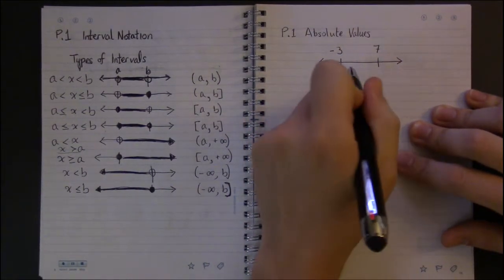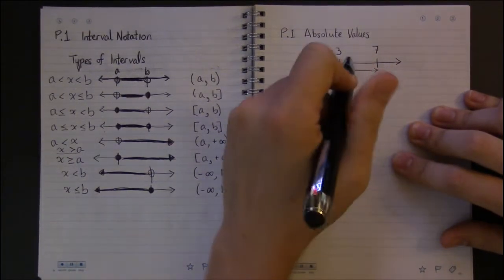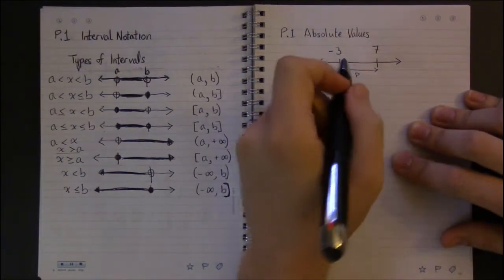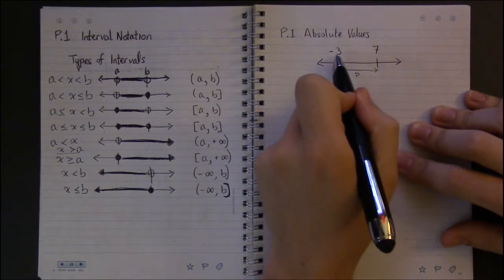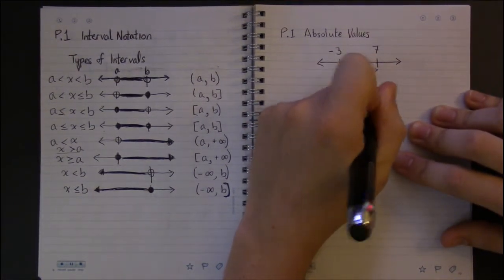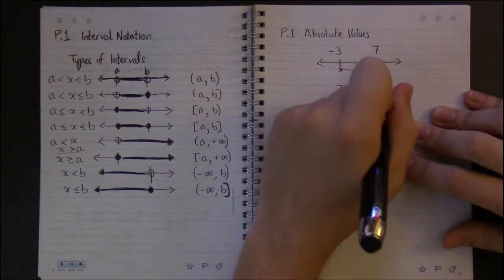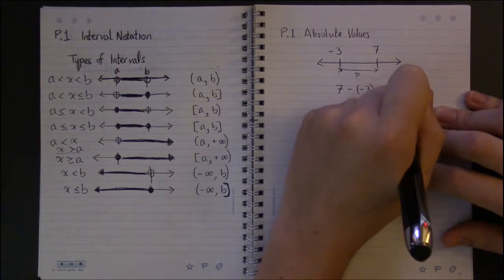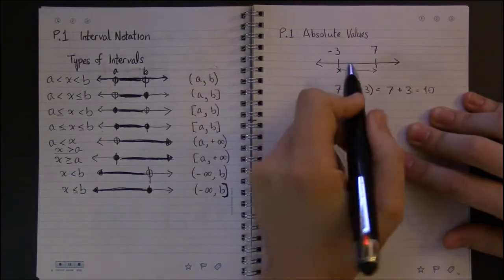If I start at negative 3, how far do I have to go to get to 7? Well, that's answered by subtraction. You just take 7, the destination, minus your starting point, and that'll tell you how many steps you have to take to get to your destination. So in this case, 7 minus negative 3 becomes 7 plus 3, so we'd have to take 10 steps to get to 7.